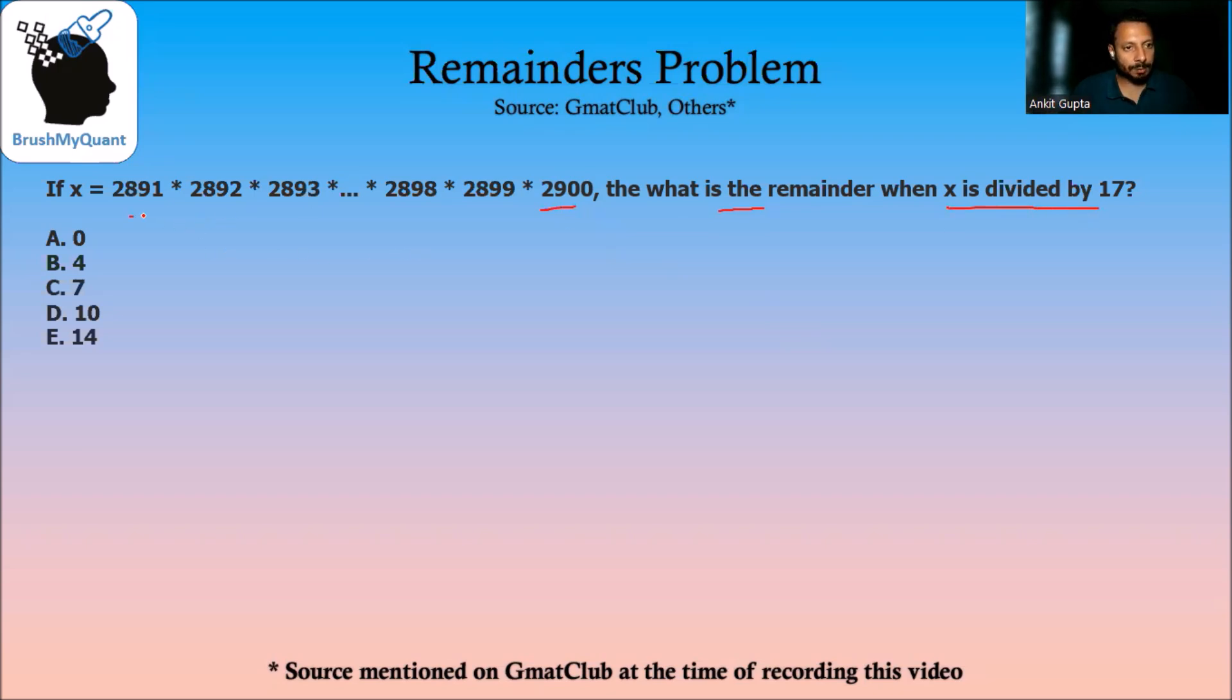An expression is given to us which is a multiplication of a lot of big numbers and we need to divide this expression by 17. Now, there is a property of remainders which says that remainder of product of two numbers is same as product of remainder of two numbers.